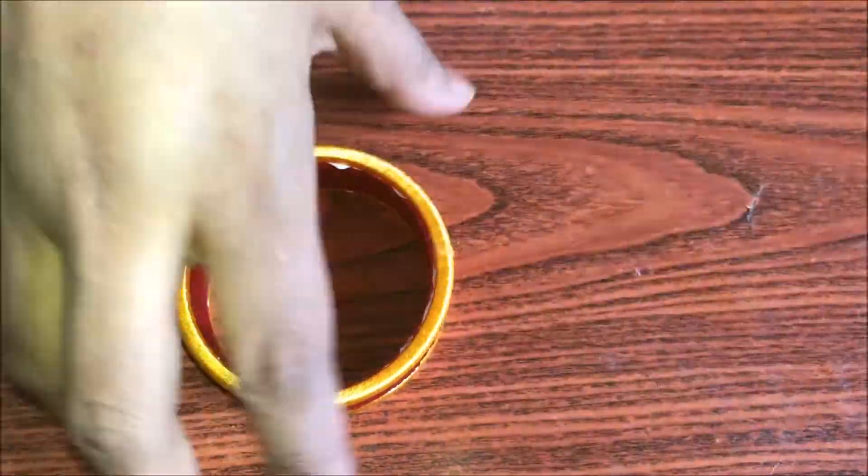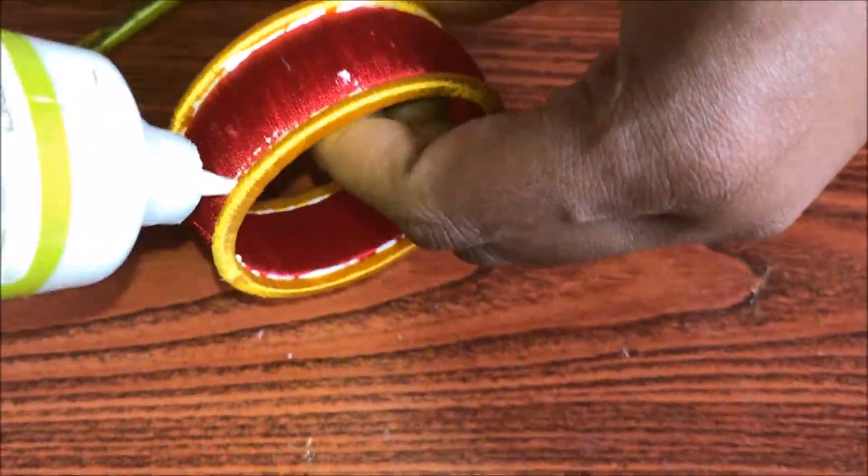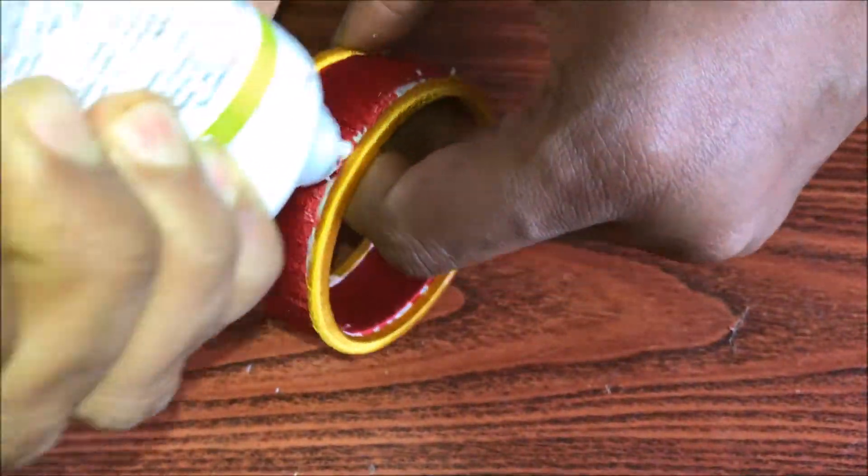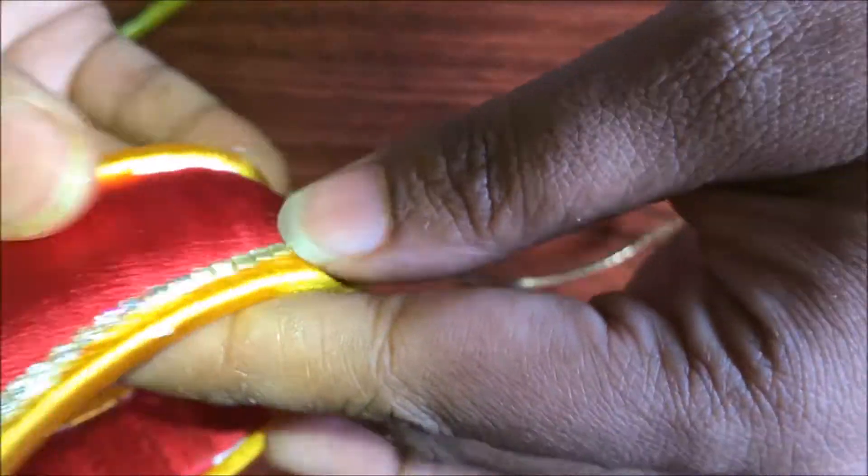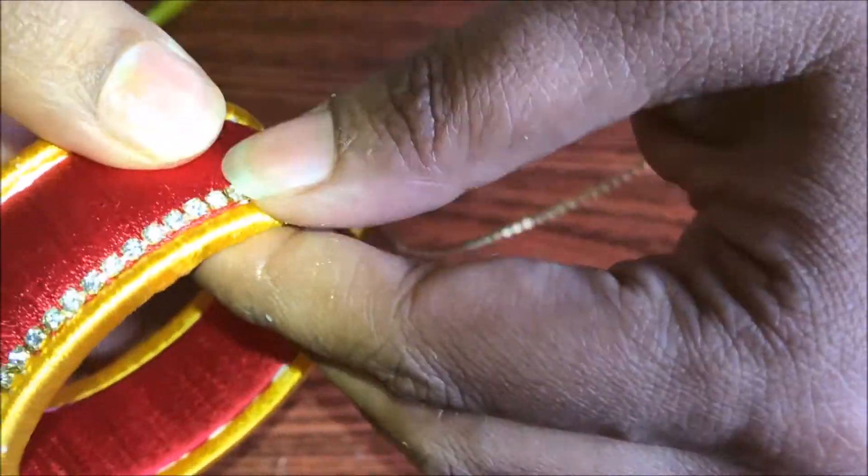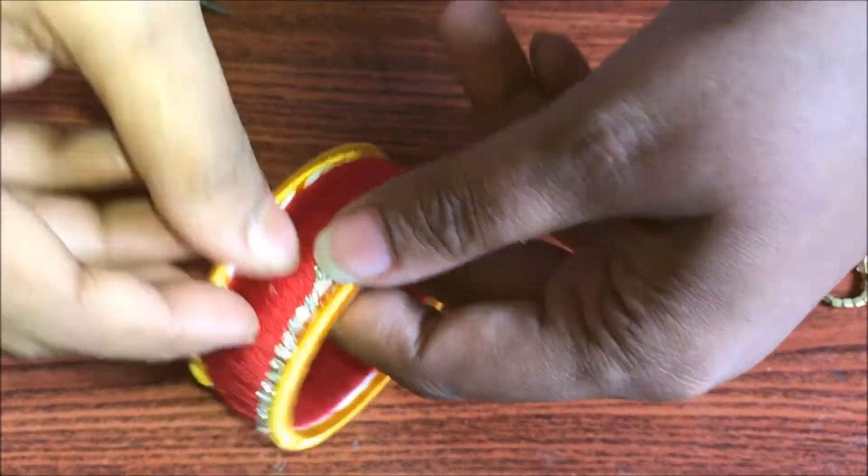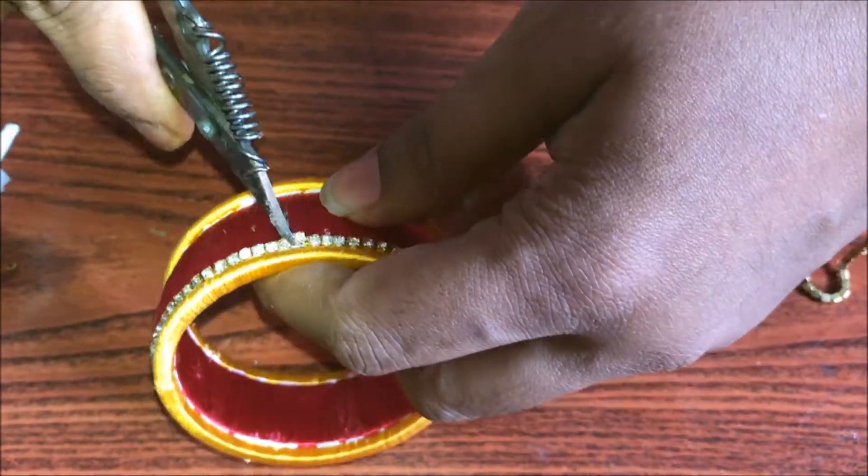Between the red color bangle and the yellow color bangle, after it has dried up, we are going to stick the stone chain over there on either sides. Apply a thick coat of glue all along the circumference of the bangle. Ensure that the stone chain does not flip and is facing on to the top. Cut it at the end. Repeat the same process on the other side as well.